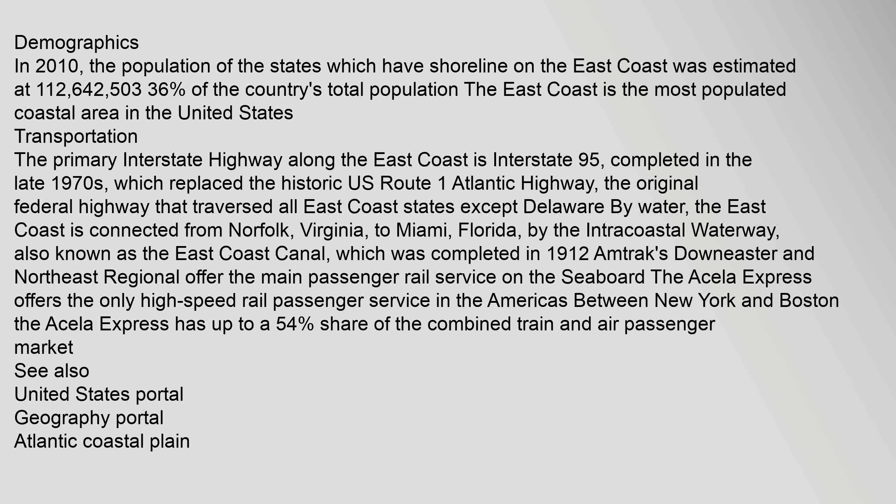The primary interstate highway along the east coast is Interstate 95, completed in the late 1970s, which replaced the historic U.S. Route 1 Atlantic Highway — the original federal highway that traversed all east coast states except Delaware. By water, the east coast is connected from Norfolk, Virginia, to Miami, Florida, by the Intracoastal Waterway, also known as the East Coast Canal, which was completed in 1912.